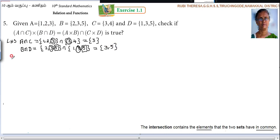Next what you should do? You have to find out A intersection C cross B intersection D. What is A intersection C? 3. Cross. What is B intersection D? 3, 5. So 3 is paired with 3 and 5. So 3, 3 and 3, 5. So this is the first equation.